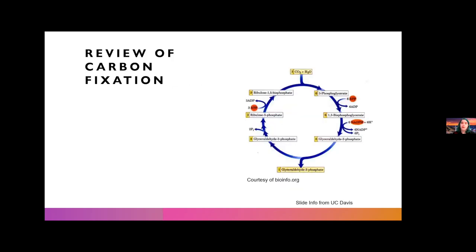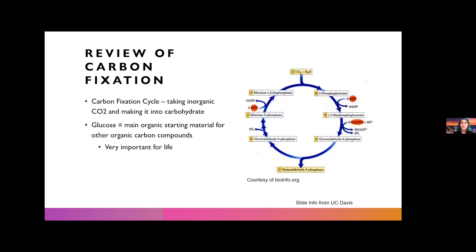Now talking about carbon fixation, as we all know, it's generally the process of taking inorganic carbon and turning it into organic carbon or carbohydrates. As you see in the cycle to the side, that's generally how it works, and I would like to point out really quickly one of the important parts of it is glyceraldehyde, which is something that my enzyme helps produce. Of course, glucose is the main organic starting material for other organic carbon compounds, which is why it's so important to living organisms and why all living organisms need to take in and consume glucose in order to keep their energy.